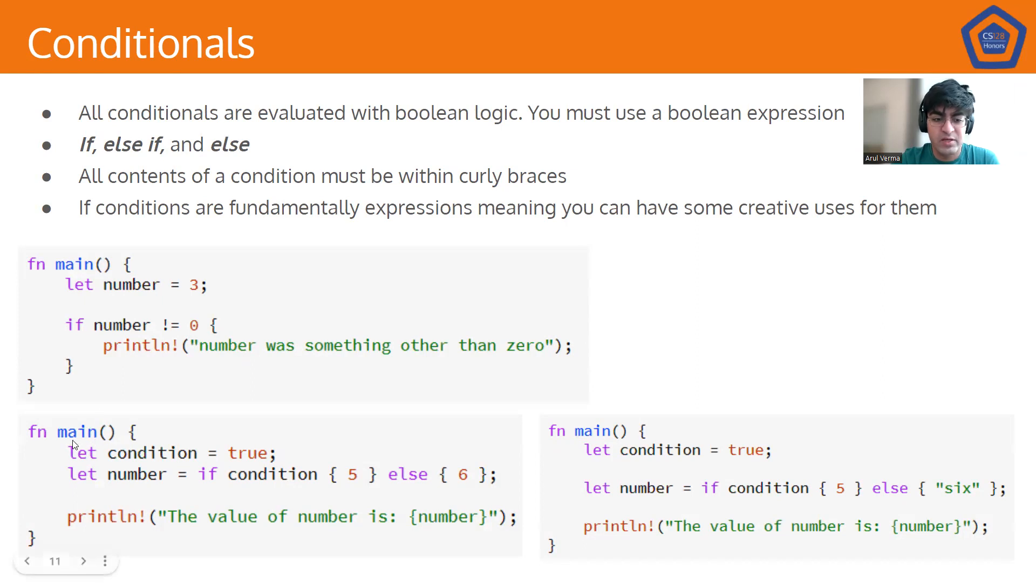Now, if we look at the next one, we get let condition equals true. Because we know that this is a boolean condition. Then we say let number if condition 5, else 6. Because condition just checks if it's true, then we can say number is equal to 5 if this condition is satisfied. Otherwise, number is equal to 6. In this case, the number is 5. So the value of number will be 5.